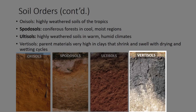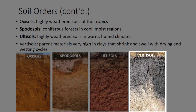Vertisols form from parent materials very high in clays that shrink and swell during drying and wetting cycles, such that large soil cracks form. This causes a churning of the soil that mixes the upper soil. They are said to be self-inverting. Vert means churn. Vertisols make up about 1% of U.S. soils, most commonly in south-central states.